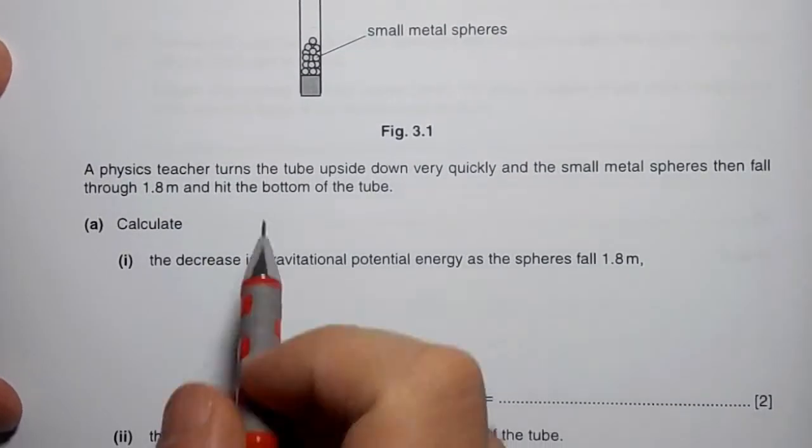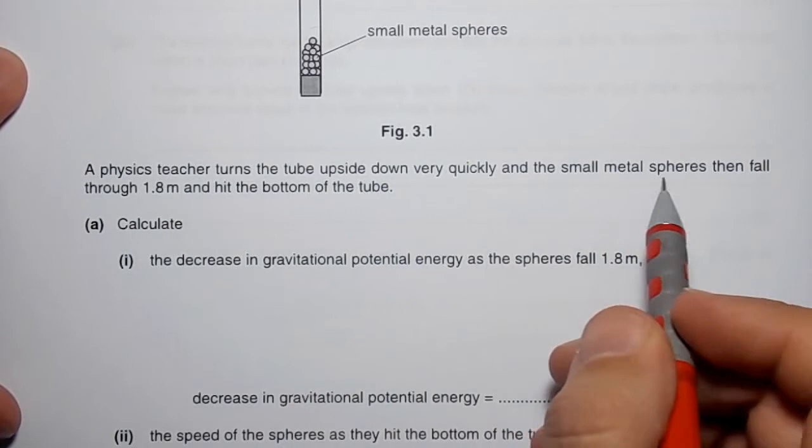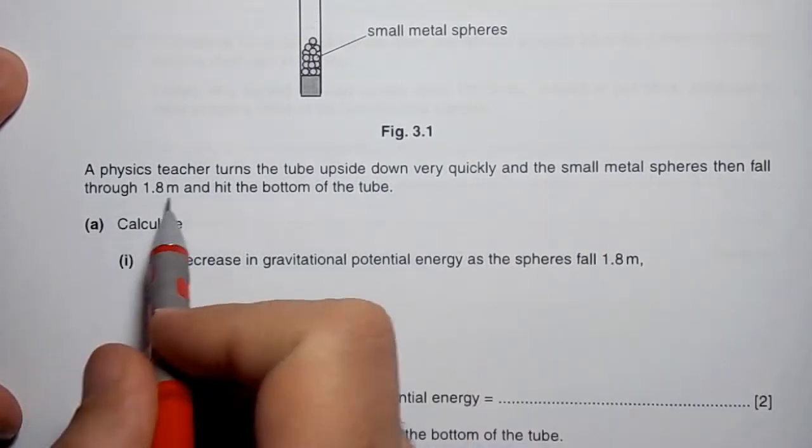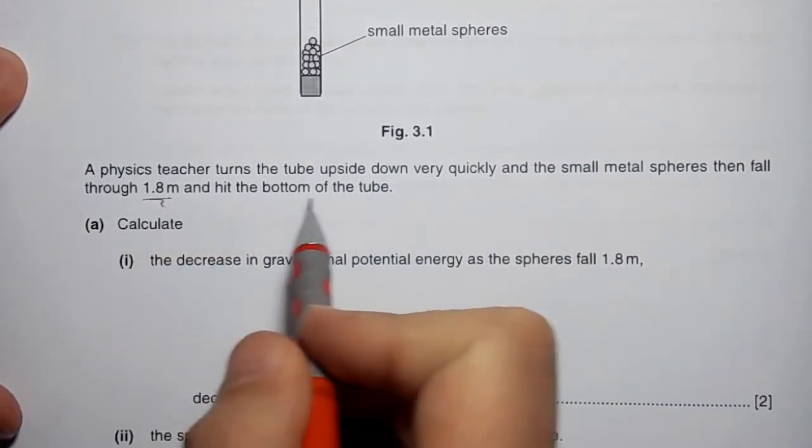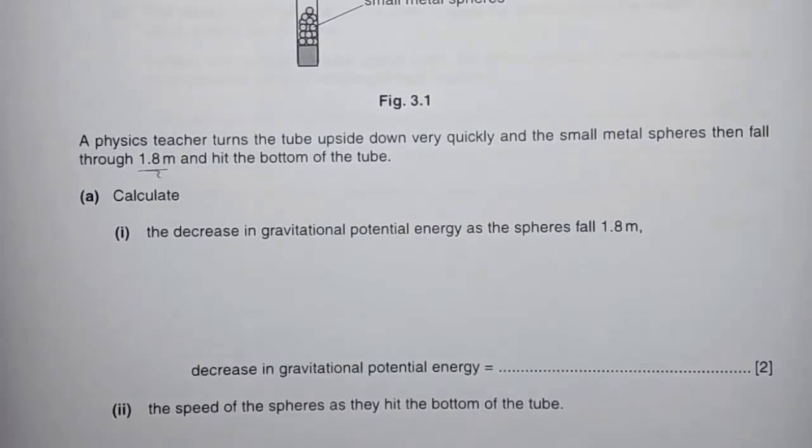A physics teacher turns the tube upside down very quickly and the small metal spheres then fall through 1.8 meters and hit the bottom of the tube. Calculate the decrease of the gravitational potential energy.